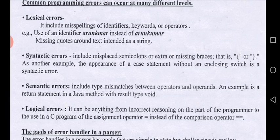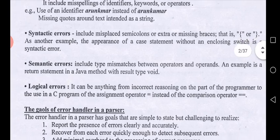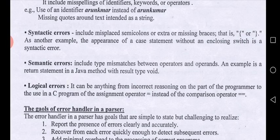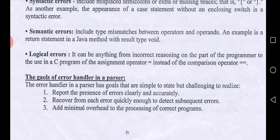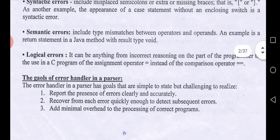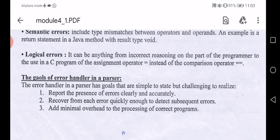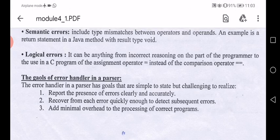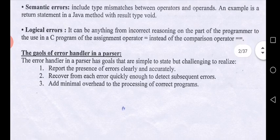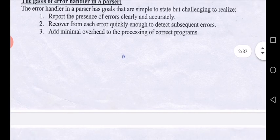Semantic errors relate to the type of information or operands. For example, declaring a variable as integer but using a floating point number causes a type mismatch between operators and operands — this is a semantic error. Logical errors include things like using '==' (comparison operator) where '=' (assignment) was intended. These are the different levels of errors that may occur in programming.